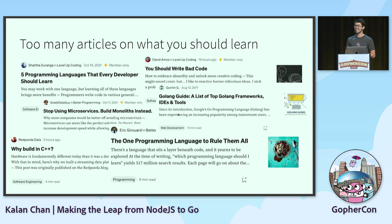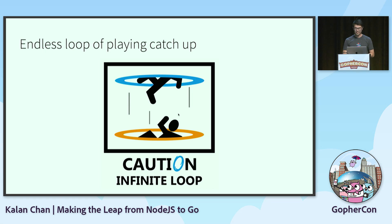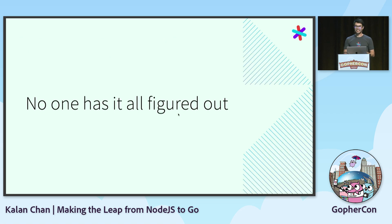I feel like our industry has normalized this idea that you always have to be learning a new language, or there's a new technology you should be checking out every other month, on top of everything else we're already working on — and it can get really overwhelming. It also kind of feels like we're always in this endless loop of playing catch up: you learn one thing, get good at it, and then something else comes along and replaces it. I want to say that it's OK — no one really has it all figured out. We're all just trying to navigate this together, and some people are better at navigating it than others.